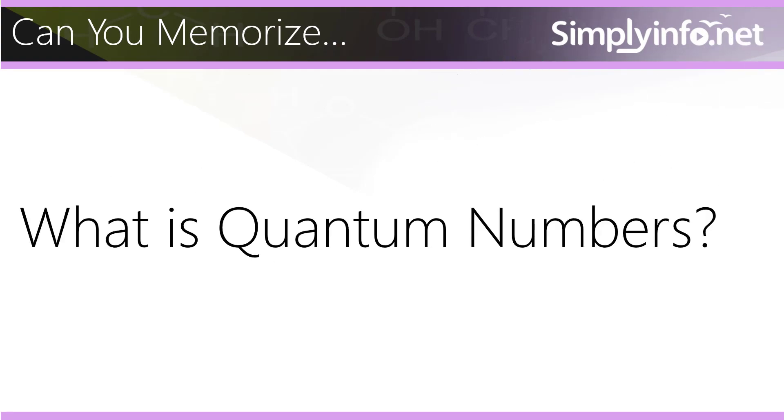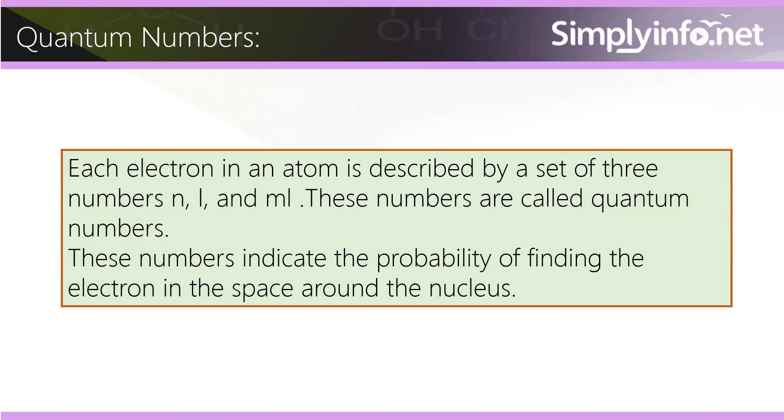Can you memorize what quantum numbers are? Each electron in an atom is described by a set of three numbers: n, l, and ml. These numbers are called quantum numbers. These numbers indicate the probability of finding the electron in the space around the nucleus.